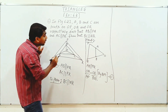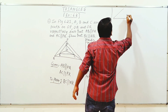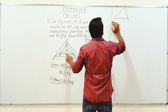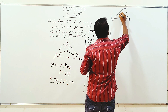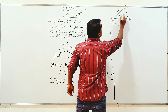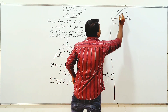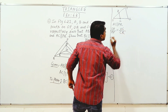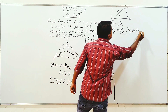This is AC parallel to PR. Where is AC parallel to PR? This is the same triangle OPR. Since AC is parallel to PR, this is the triangle OPR. So OA divided by AP is equal to OC divided by CR.